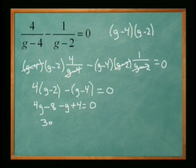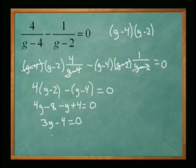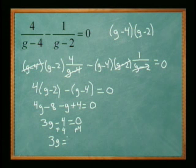Alright, so let's combine like terms. 4g minus 8 minus g plus 4 equals 0. That gives us 3g minus 4 equals 0, so 3g equals 4.